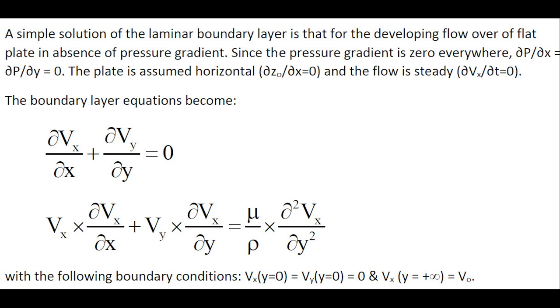The boundary layer equation may be simplified as shown here, with the appropriate boundary conditions, that Vx equals Vy equals zero at the plate, and the velocity equals the free stream velocity far away from the plate.